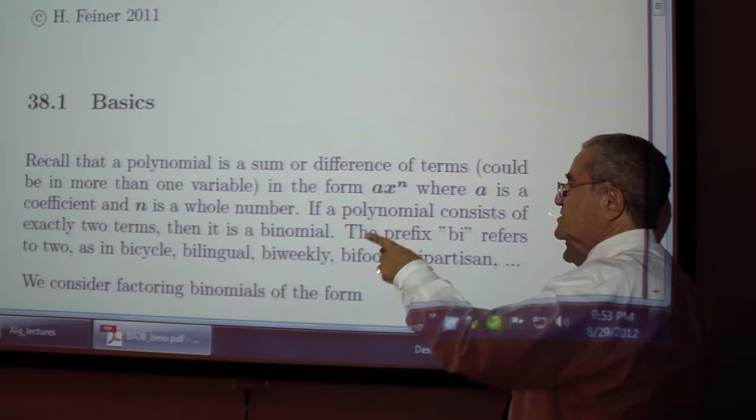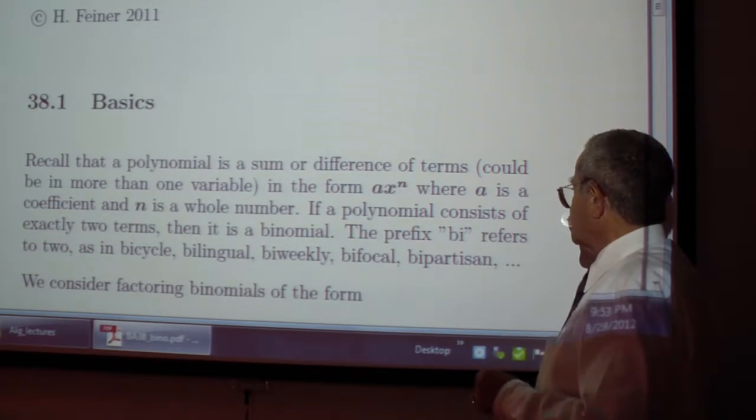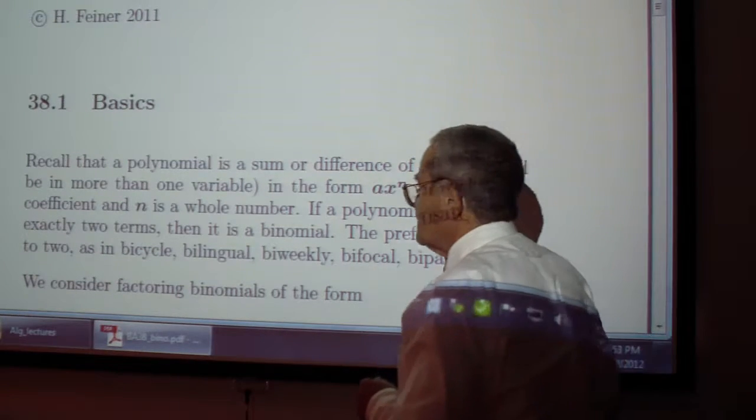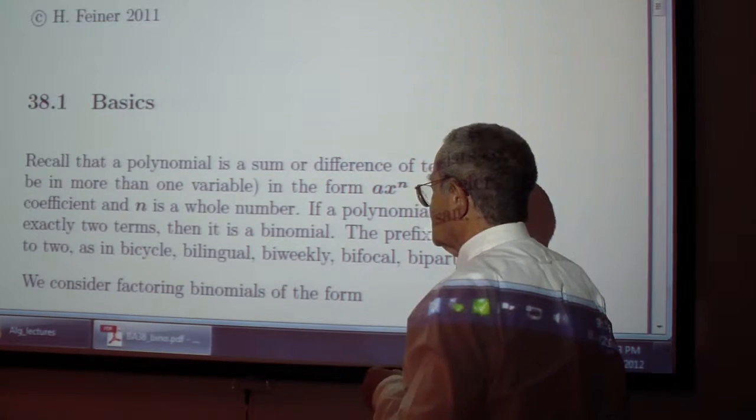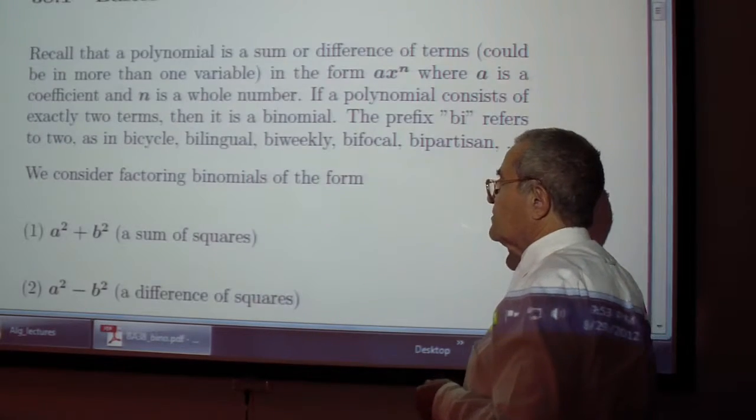If a polynomial consists of exactly two terms, then it is a binomial. The prefix bi refers to two, as in bicycle, bilingual, bi-weekly, bifocal, bipartisan, and so on.